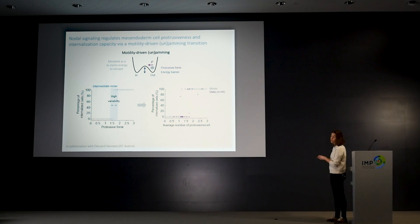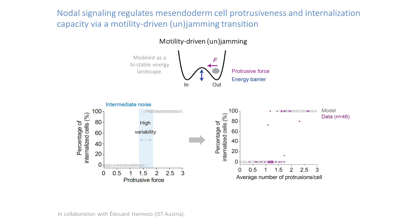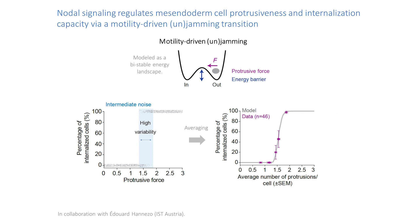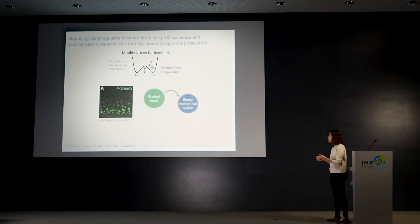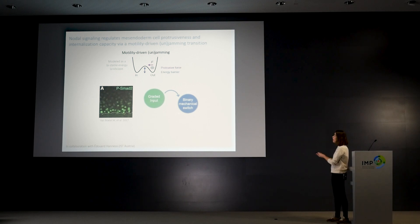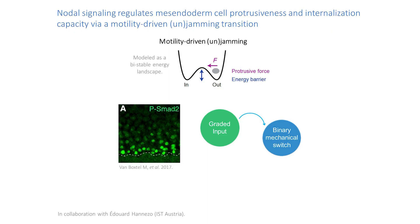Around the value of 1.5 you see some cases where cells don't make it and some where they internalize completely — so you really see variability of outcomes. Averaging all time points and conditions, there is very nice agreement between the model and the data, really supporting the idea that the gradient of nodal signaling regulates protrusiveness and internalization capacity by triggering a motility-driven unjamming transition. This allows the embryo to convert something graded at the molecular level into a binary mechanical switch giving rise to two populations of leader and follower cells.